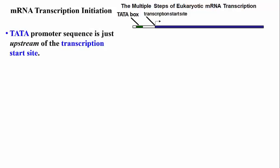This slide summarizes the complex steps of transcription initiation at eukaryotic promoters. Most eukaryotic promoters include something called a TATA box, with a sequence TATAAA, very similar to the Pribnow box in E. coli. We say the promoter is upstream of the transcription start site, by convention to the left of the transcription start site.